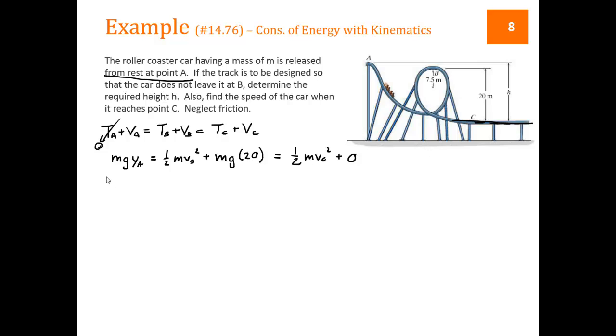Now let's look at the first half of this equation. That's going to help us answer the question, what is YA? But we need to answer this question about VB. They give us this information that they don't want the car to leave the track at B.